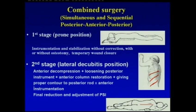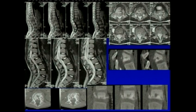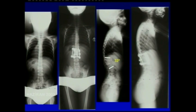You can perform simultaneous and sequential posterior surgery in the presence of severe kyphotic deformity. In the first stage in prone position: instrumentation and stabilization without correction, with or without osteotomy, and temporary wound closure. In the second stage in lateral decubitus position: anterior decompression, anterior column restoration, giving proper contour to the posterior rod, with or without anterior instrumentation, and final reduction and adjustment of posterior instrumentation. We performed simultaneous sequential posterior-anterior surgery in a case showing progression of kyphosis during follow-up.